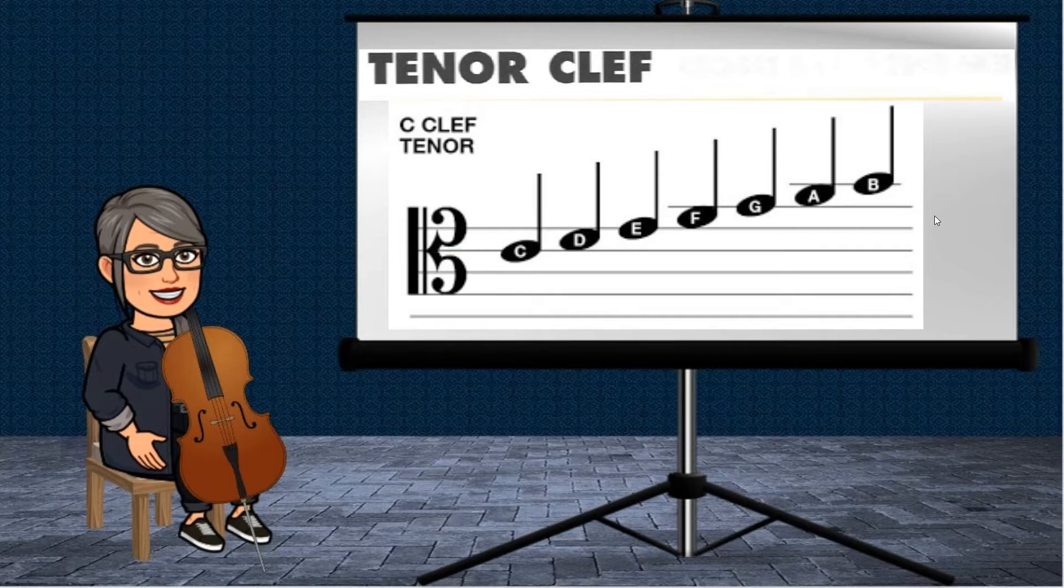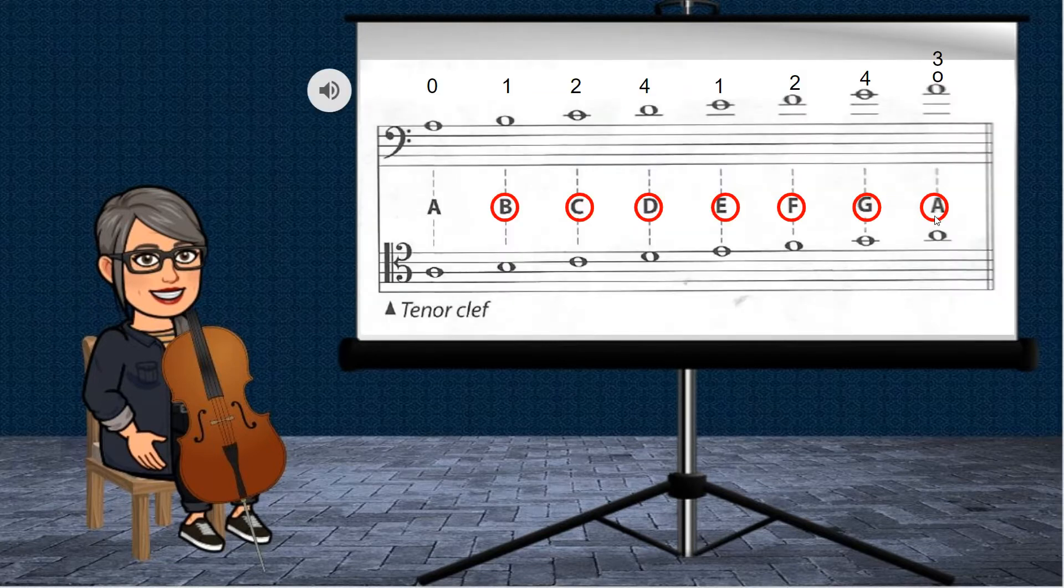Let's take a look at an example. This here is the A natural minor scale. The very first note is A, your open A string. Now, if you take a look at it in bass clef, you are very familiar with where A is located. It is on the fifth line of the music staff, and if we were to look at it in tenor clef, it is on the third line of the music staff. I'm going to go ahead and play this example for you, and I would like for you to follow along first reading in bass clef.